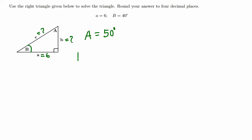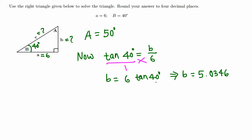Tangent of B, which is 40 degrees, equals b over a. So b over 6. We can cross multiply to get b equals 6 times tangent 40 degrees. Using a calculator, we get b equals 6 times tangent 40, which is 5.0346. So this is the answer.